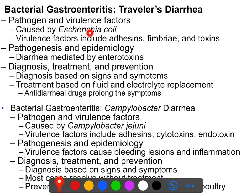Traveler's diarrhea is usually caused by various strains of E. coli. Pathogenesis and epidemiology: it's mediated by enterotoxins and usually fecally-orally transmitted. Diagnosis is usually based on signs and symptoms — it's not usually specific. If you go to the doctor and say you just moved to or visited an area and suddenly have an upset stomach and frequent diarrhea, the doctor will say you have traveler's diarrhea: get plenty of water, bed rest, and it will probably go away in a couple of days.